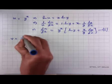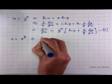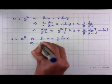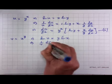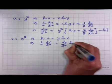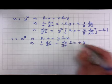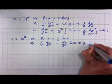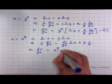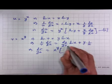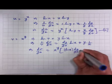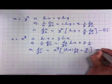Since v = x to the y, ln(v) = y ln(x). Differentiating: 1/v times dv/dx = dy/dx times ln(x) plus y times (1/x). Therefore dv/dx = x to the y times [ln(x) dy/dx + y/x]. Call this equation 3.